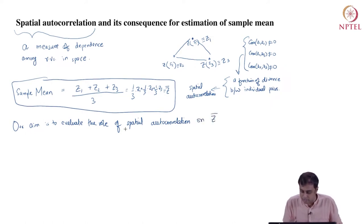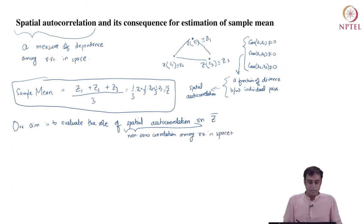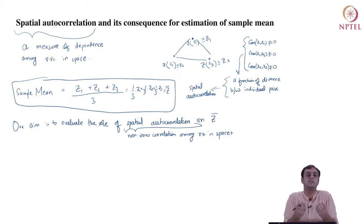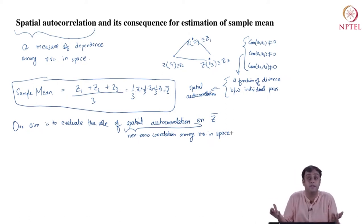Spatial autocorrelation is nothing but non-zero correlation among random variables in space. We want to see if you have this correlation — this dependence metric — how does it affect the mean? Does it at all affect it or not?